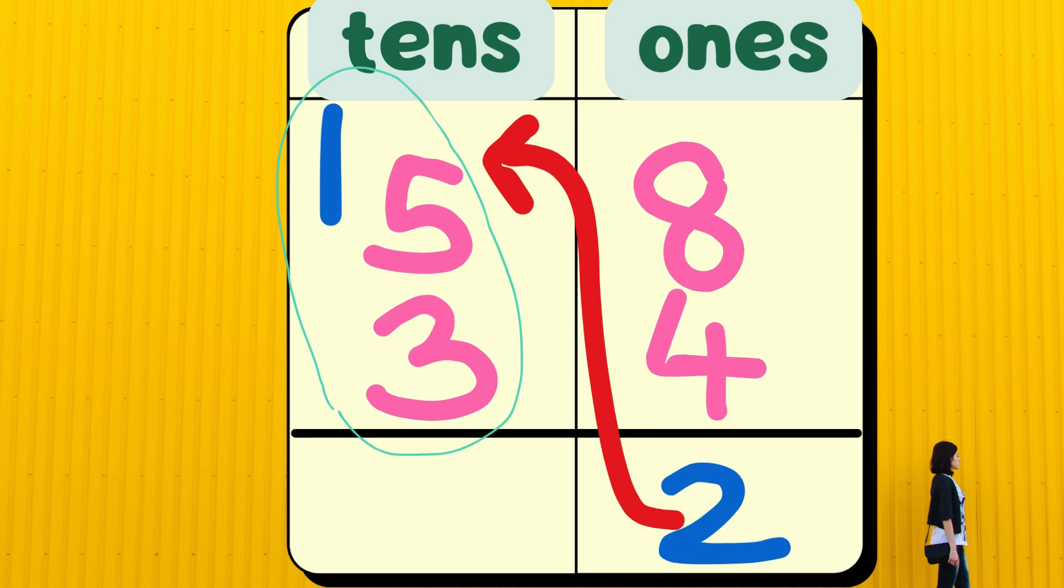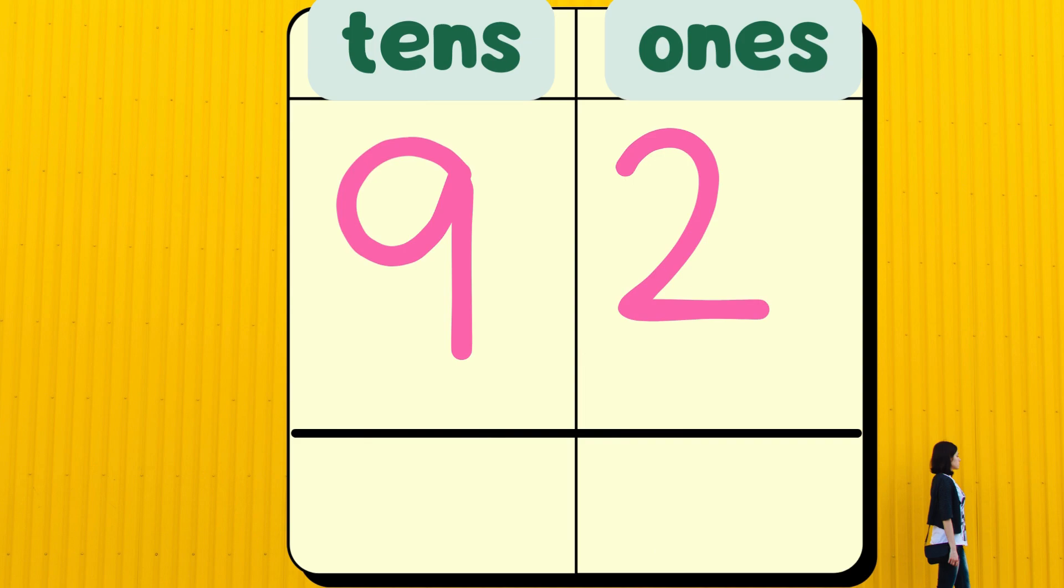Now let's add the 10s together. Let's add 5 plus 3 plus 1. We get 9. So the total is 92. 92 has 9 10s and 2 1s.